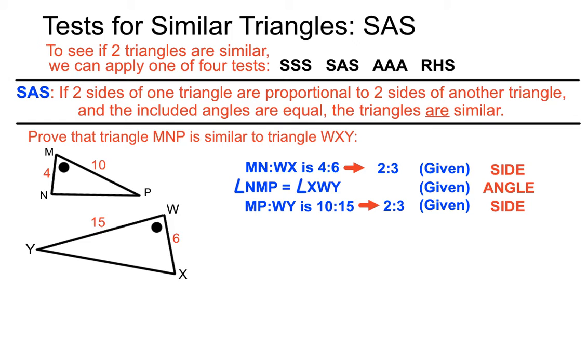So we've pieced together enough information here from these diagrams to pass the similar triangles test. We'll just sum this all up here. Triangle MNP, and we'll use the symbol for is similar to, triangle WXY. And the reason is that it passes the SAS test.